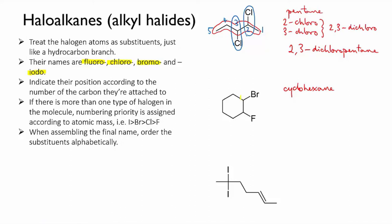We can start here and make the carbon that the bromine is attached to number one and then the fluorine one would be number two. Or we could do it the other way around, making it 1-fluoro and 2-bromo. So how do we choose?